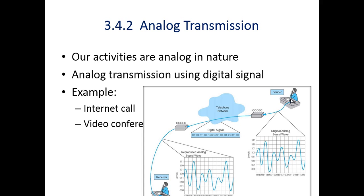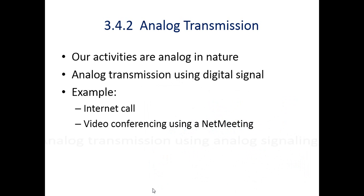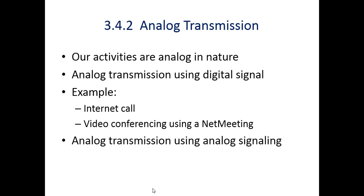The CODEC is the device which converts analog data into digital data. So the analog data input by the user is converted into digital data using the CODEC — this is the digital signaling — and it is transmitted over a large distance. At the receiver side, there is again a CODEC device which converts the digital data back into its equivalent analog waveform. This digital data is converted to analog using the CODEC and received by the receiver in the correct form.